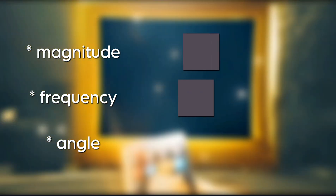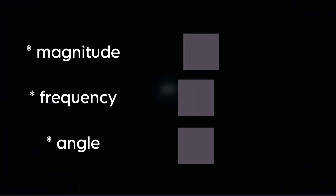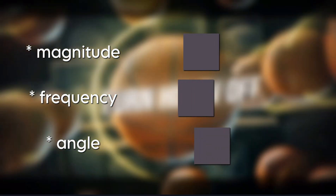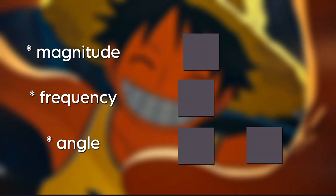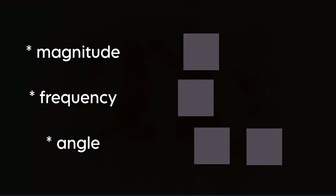Magnitude controls how far it moves. Frequency is how fast it moves. Angle defines the direction of motion — 0 degrees for horizontal, 90 degrees for vertical.